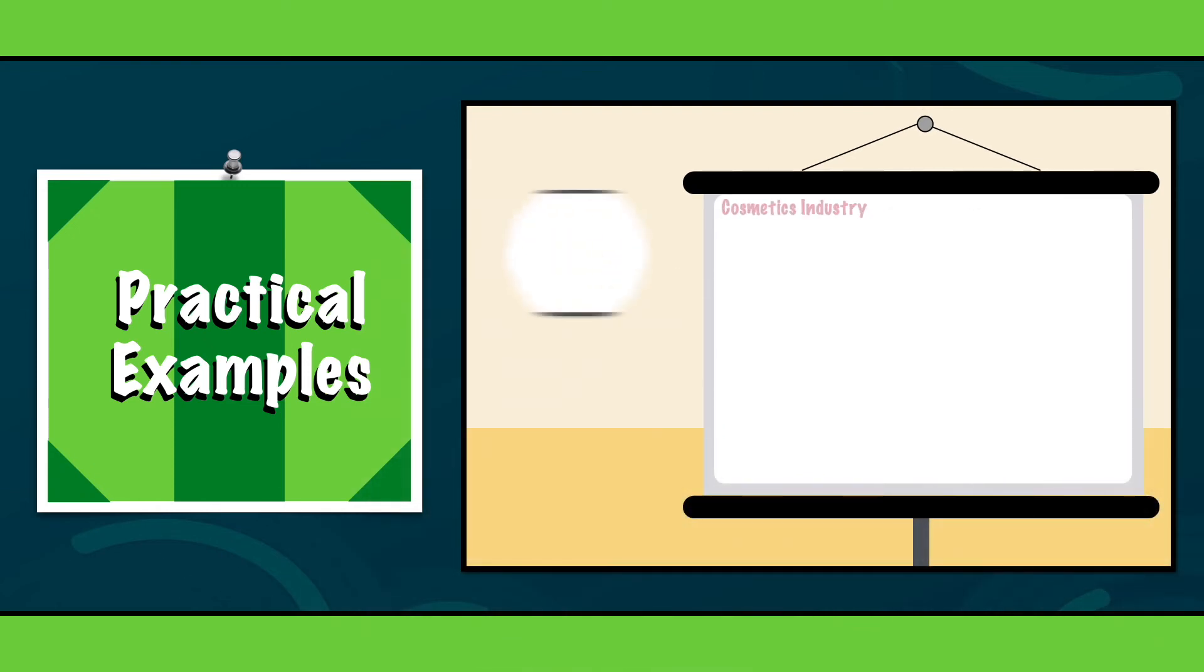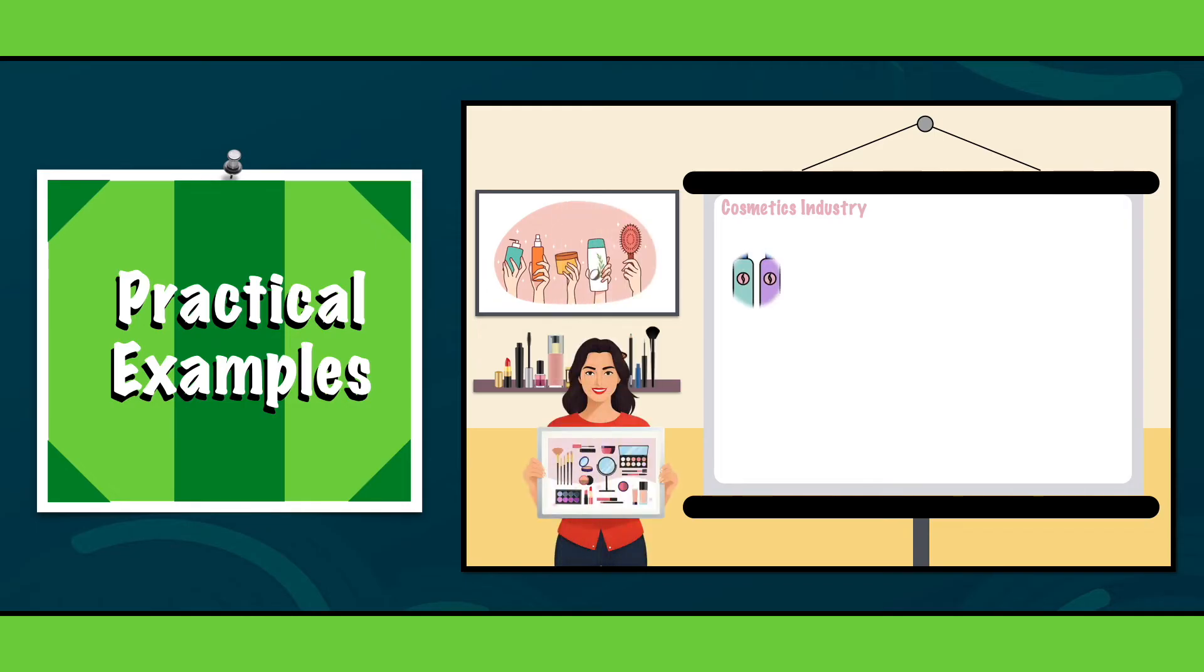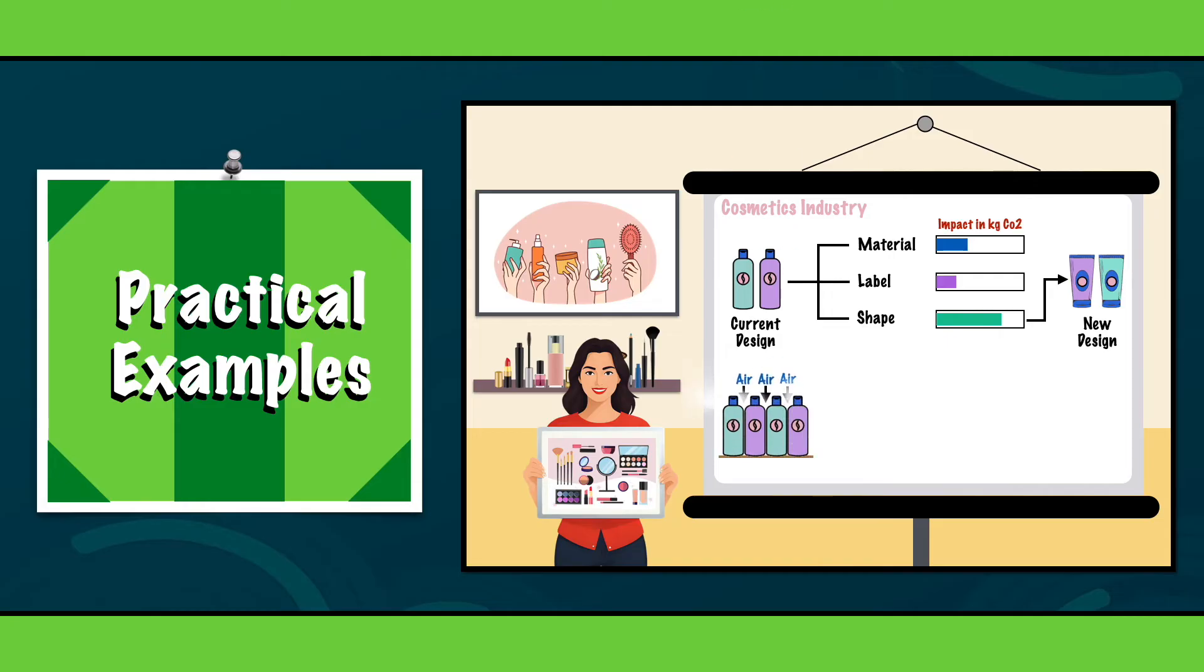The cosmetics industry. The first example comes from the cosmetics industry, where a company conducted a sustainable lifecycle assessment to evaluate the environmental impact of their shampoo packaging. They discovered that the design of their shampoo tubes was a major contributor to their carbon footprint. By redesigning the packaging, the company was able to reduce excess air in shipments, improving efficiency. This change led to a huge decrease in emissions per product, benefiting both the environment and the company's profit through cost savings.